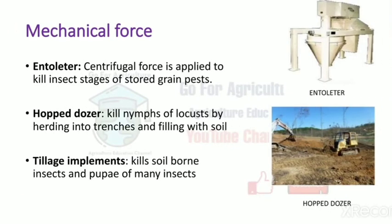Next is mechanical force, where we use machines to kill insects. One such method uses an entoliter, a device that uses centrifugal force. We put grains into it — since grains often contain insects — and the machine stirs the grains in a circular path, killing the insects while saving our grains.